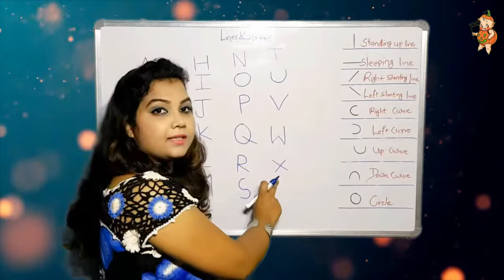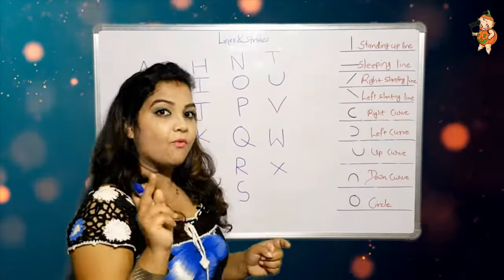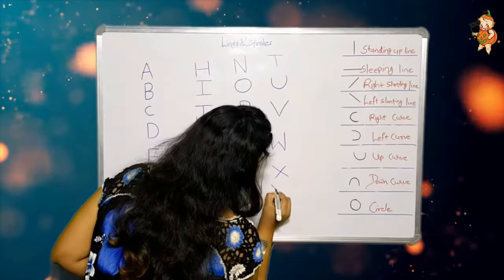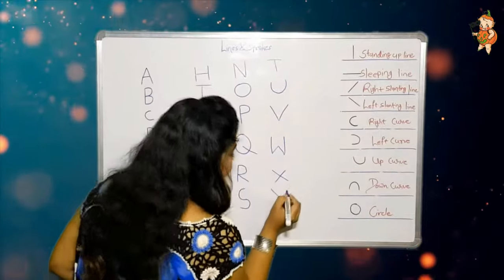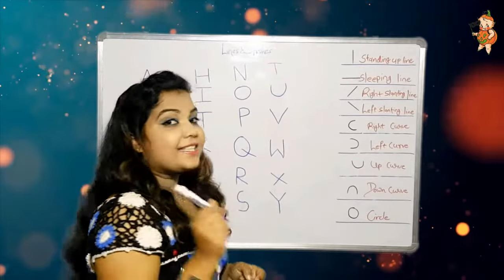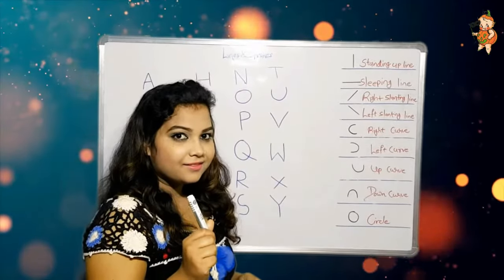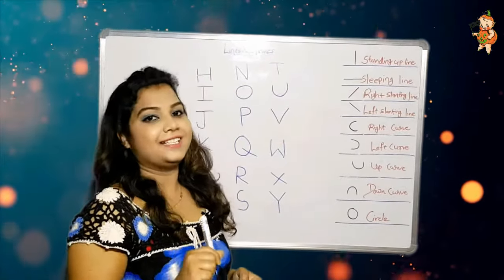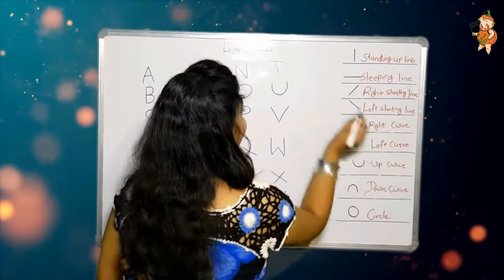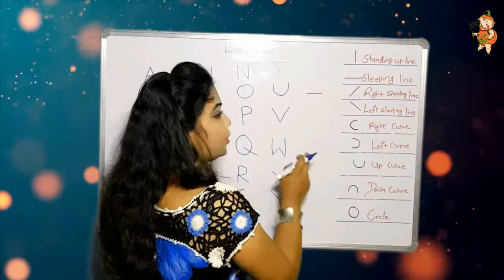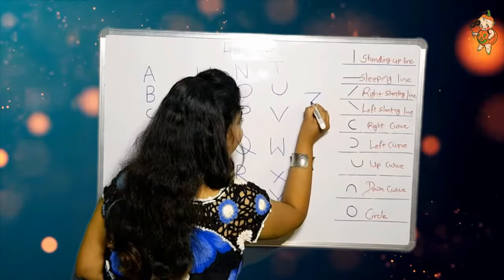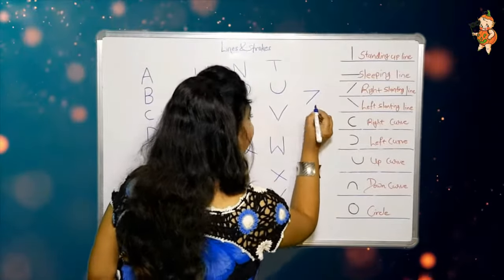Now it's time to make Y — one left slanting line, one right slanting line, and one standing up line. Now it's time to make the last one, Z — for zebra. One sleeping line, one right slanting line, and one sleeping line.